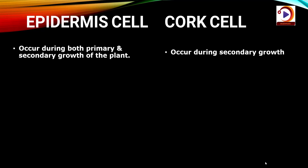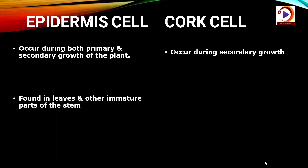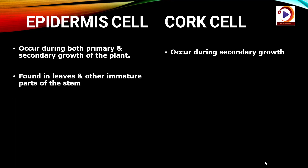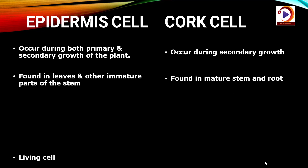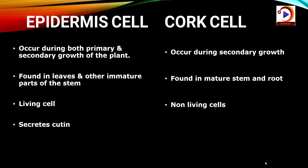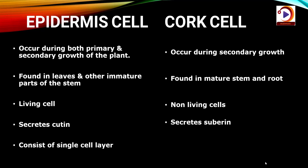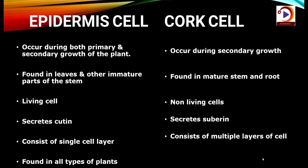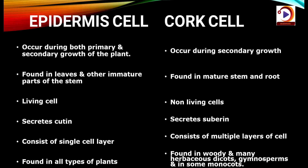Epidermal cells occur during both primary and secondary growth, whereas cork cells occur during secondary growth. Epidermal cells are found in leaves and other immature parts of the stem, while cork cells are found in mature stem and roots. Epidermal cells are living in nature whereas cork cells are non-living. Epidermal cells secrete cutin while cork cells secrete suberin. Epidermal cells consist of a single cell layer whereas cork cells consist of multiple layers. Epidermal cells are found in all types of plants, whereas cork cells are found in woody and many herbaceous dicots, gymnosperms and some monocots.